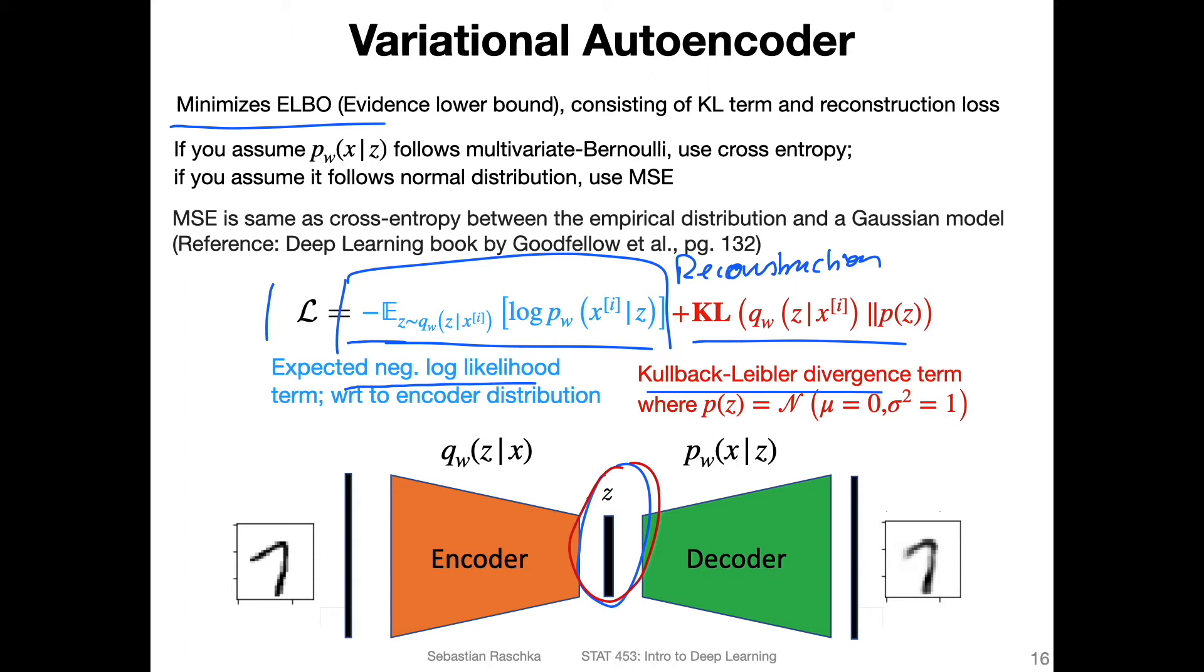Now, if you would look at some implementations of variational autoencoders, what you might find is that usually for the reconstruction loss, people either use the binary cross entropy or the mean squared error. Both work in practice. Personally, I would say it makes more sense to use the mean squared error.